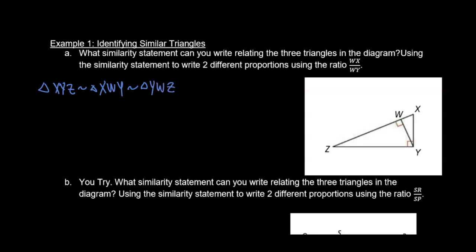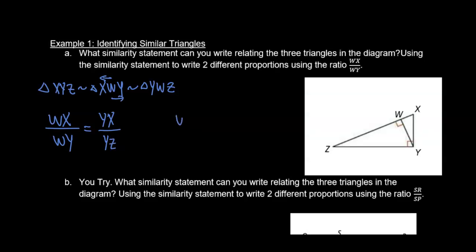It then asks us to use the similarity statement to write two different proportions using the ratio WX to WY. Working off our middle triangle: WX to WY — going this way — that would be YX to WY, which is similar to YZ. And WX to WY, using the last triangle, that would be WY matching up with WZ.